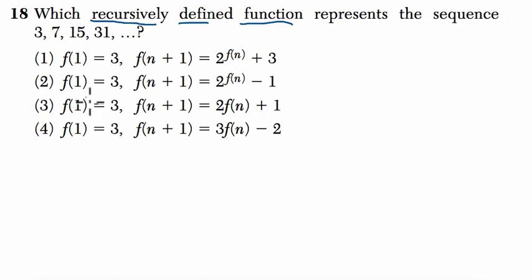So let's look at our sequence to understand what's happening. We have 3, and then we take 3, we do something to it, and then we get 7, and then we do something to that number and get 15, and then 31. So this sequence, each step, 31, is built directly on 15. 15 is built directly on 7, and 7 is generated or built directly from 3.